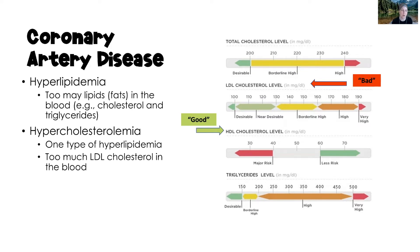Our total cholesterol should be less than 200 milligrams per deciliter. Our LDL, which is our bad cholesterol, needs to be less than 100 milligrams per deciliter. Our HDL, which is our good cholesterol, we want to be greater than 60 milligrams per deciliter. And our triglycerides need to be less than 150 milligrams per deciliter.